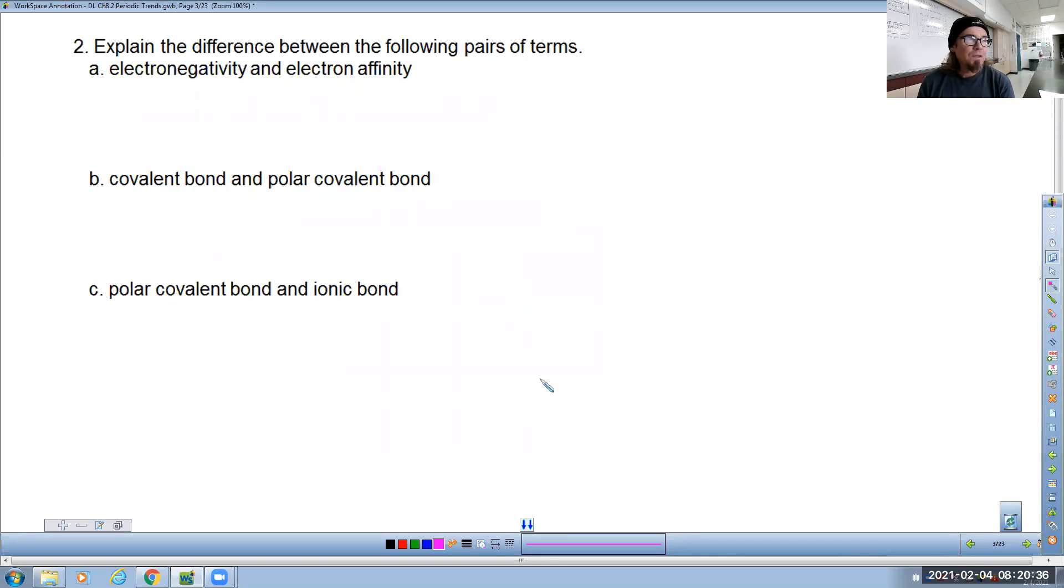Question number two, explain the difference between the following terms: electronegativity and electron affinity. I almost use those two terms interchangeably because they're very similar, but electron affinity is more a measurement of energy and then therefore tends to be more about ions. And electronegativity tends to be more about covalent bonds, covalent.